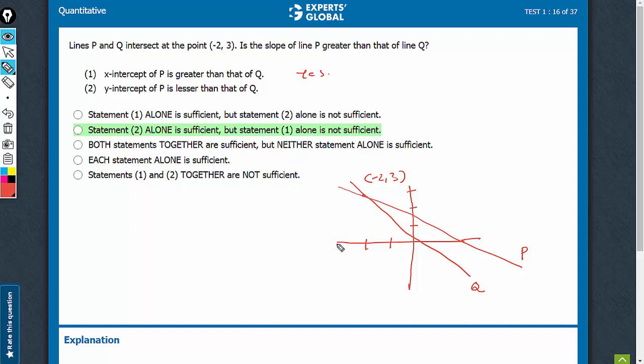I imagine if the line q were something like this. This is my line q. See, although its x-intercept is lesser than line p, it has a positive slope, right? A positive slope will of course be greater than a negative slope. So in this case, we have got the answer no.